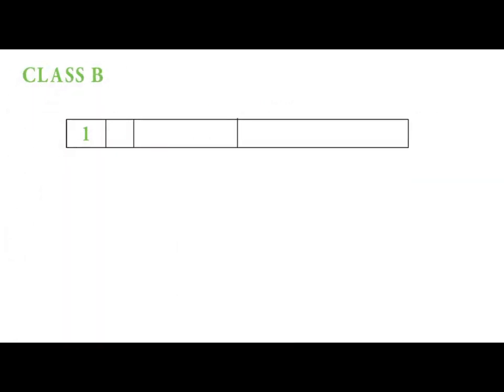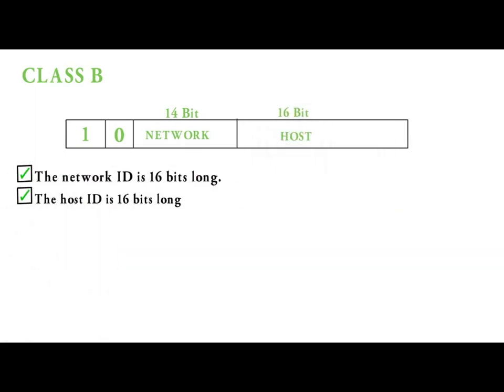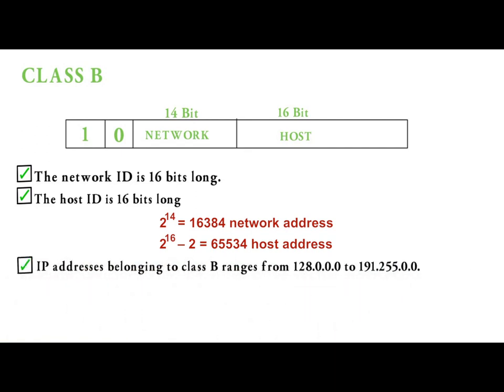In class B IP addresses, the network ID is 16 bit long and the host ID is 16 bit long. It has 16,384 network addresses and 65,534 host addresses. IP addresses belonging to class B range from 128.0.0.0 to 191.255.0.0.